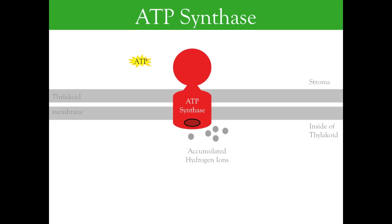This flow is produced by the production of hydrogen ions associated with water splitting, and the pumping of hydrogen ions associated with the electron transport chain of photosystem 2.